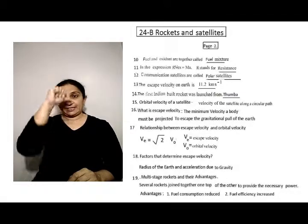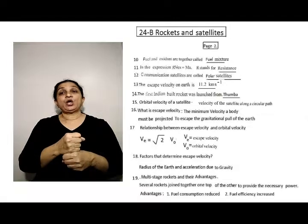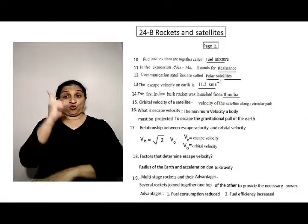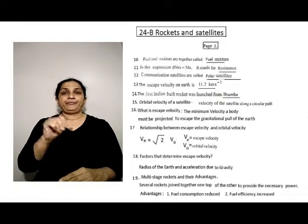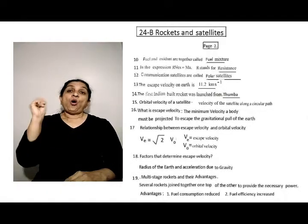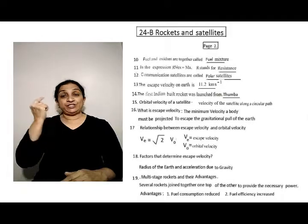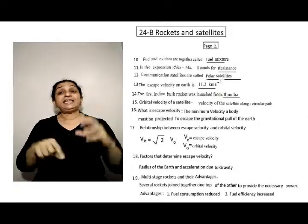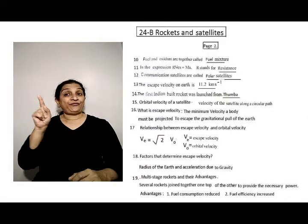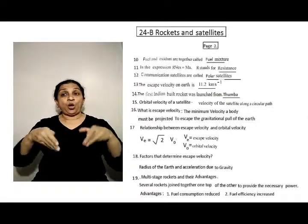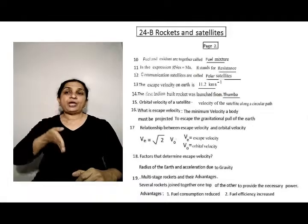Fourteen, the first Indian built rocket was launched from Thumba. Fifteen, orbital velocity of a satellite is velocity of the satellite along a circular path.